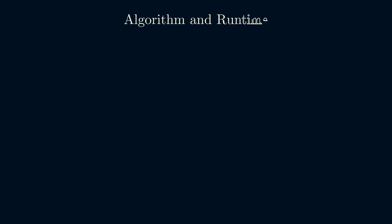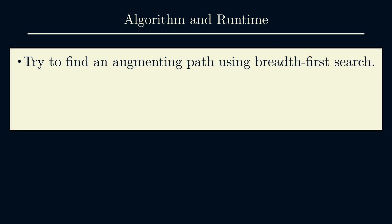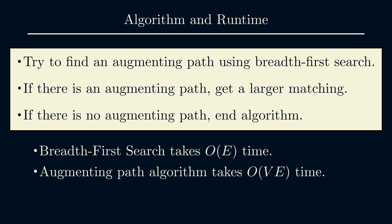Let's summarize the full algorithm and talk about runtime. In each iteration, we try to find an augmenting path using breadth-first search. If there is an augmenting path, we swap assignments to get a larger matching. Otherwise, the algorithm ends. Now, running breadth-first search might require examining all the edges. The worst-case runtime is O(E). If you're not familiar with this notation, it means in the worst-case, the runtime is proportional to the number of edges. We might have to run this for all the vertices in one side of the bipartite graph. So the total worst-case runtime is roughly the number of vertices times the number of edges.